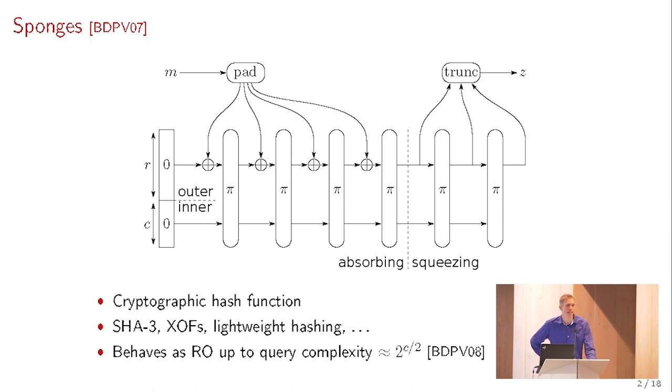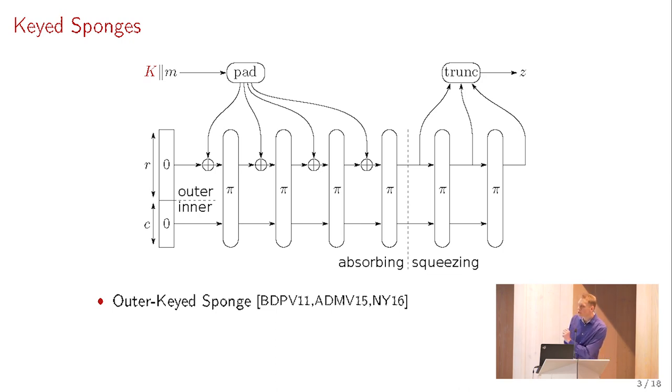Since the introduction, it has been used in many hash functions, including SHA-3. Many lightweight hash functions are based on it, and it is proven that if you take an ideal permutation pi, then this construction behaves like a random oracle up to 2 to the C over 2, where C is the capacity, so the size of the inner state. But this is just keyless hashing. It turns out that you can also use the sponge in a keyed setting.